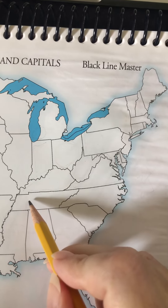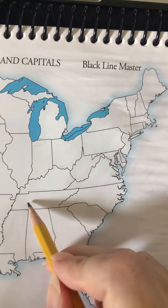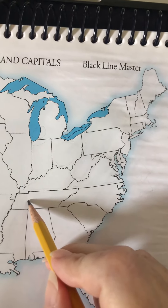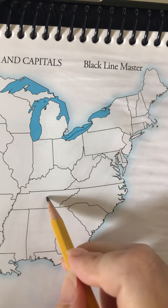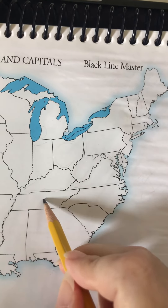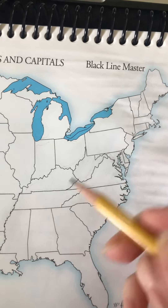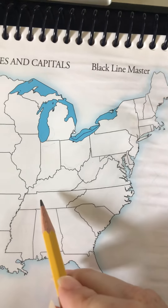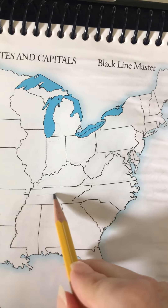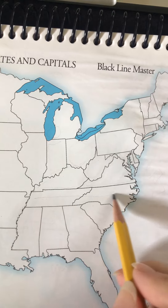For Tennessee, the capital is Nashville, so we picture a boy named Nash who likes to play tennis — Nash plays tennis in Nashville, Tennessee.